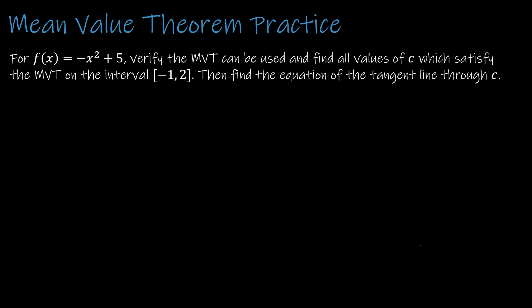For your last practice, I'm going to have you try this one on your own. There are three separate things to do: first, verify the Mean Value Theorem can be used; second, find all values of c which satisfy the MVT on the given interval; and third, find the equation of the tangent line. Get as far as you can on your own first — press pause, try the question, and when you're ready, press play to see how you did.